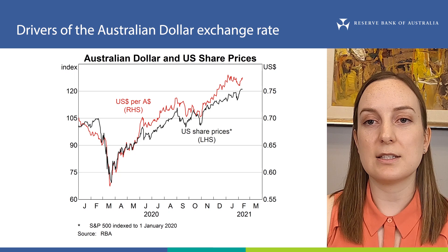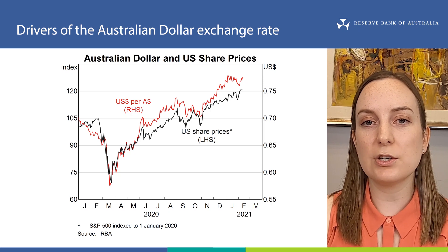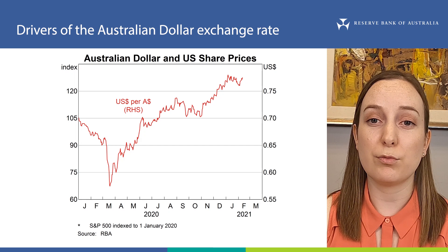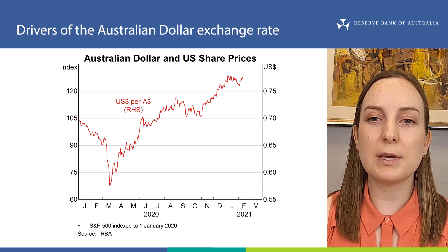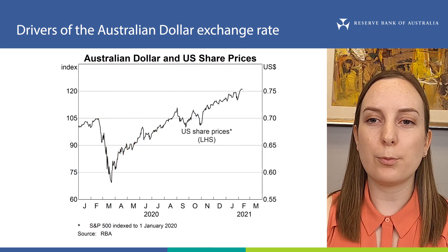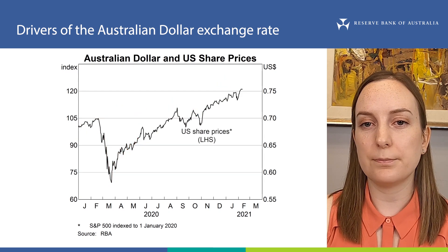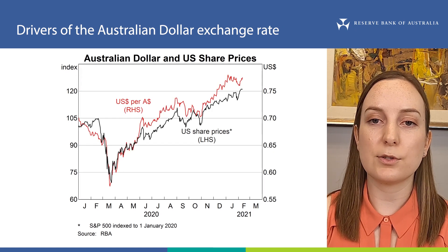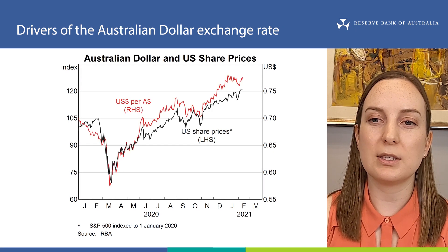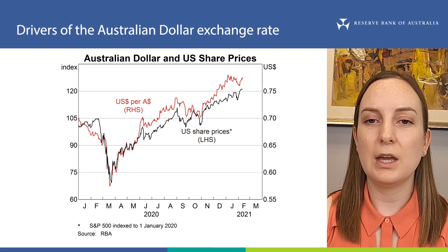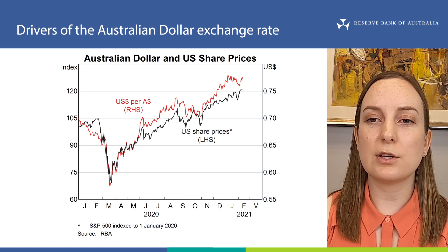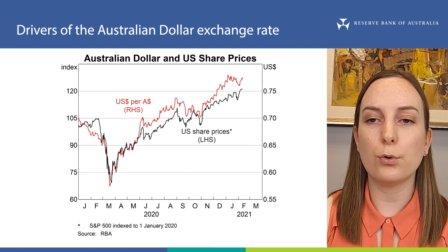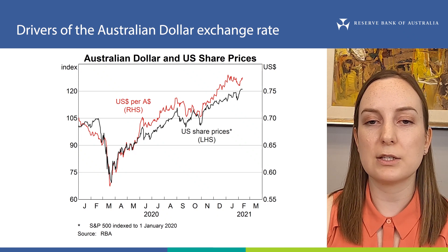Let's look at some data to see this in action. This chart shows the Australian dollar exchange rate against the US dollar in red on the right axis, and a measure of US share prices in black on the left axis. You can see that over the past 18 months or so, the Australian dollar and US share prices have moved together quite closely. This suggests that over recent times, at least, changes in risk sentiment appear to have had an important influence on the exchange rate.